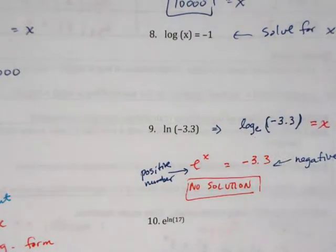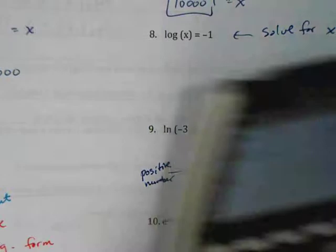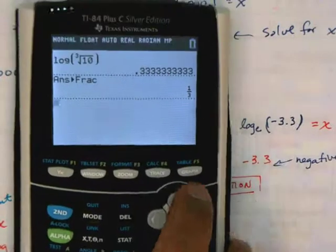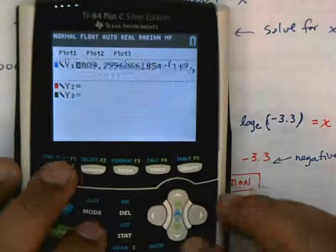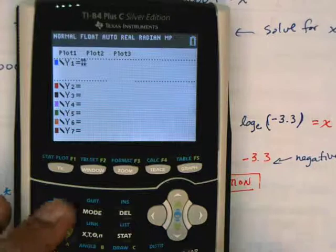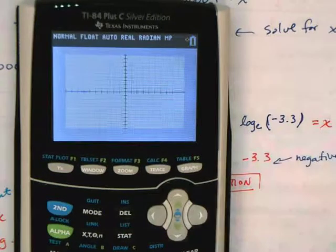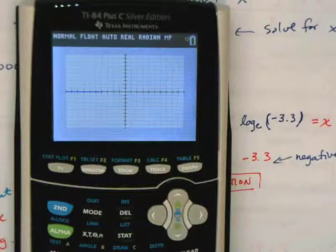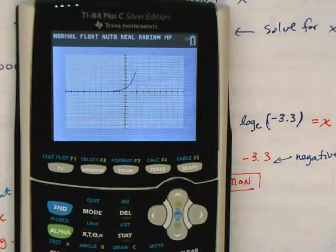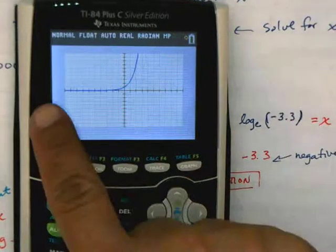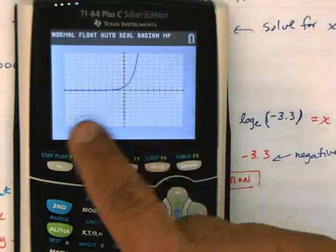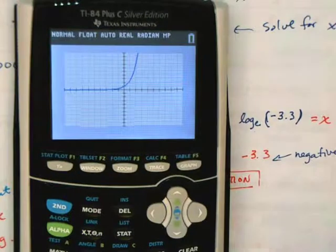Let me reiterate: e is a positive number. You're going to raise it to some exponent and get a negative number, and that simply isn't possible. Let me show you a graphical representation of why this is not possible. If I do e to the x using my standard window, you can see in the graph that it all stays above zero.